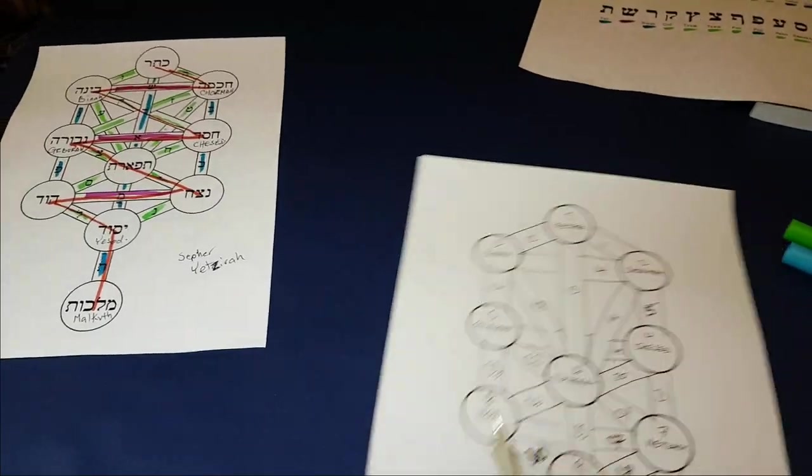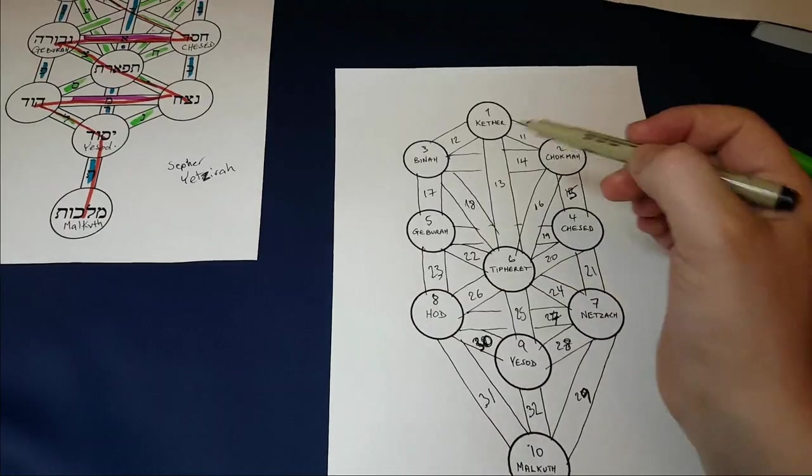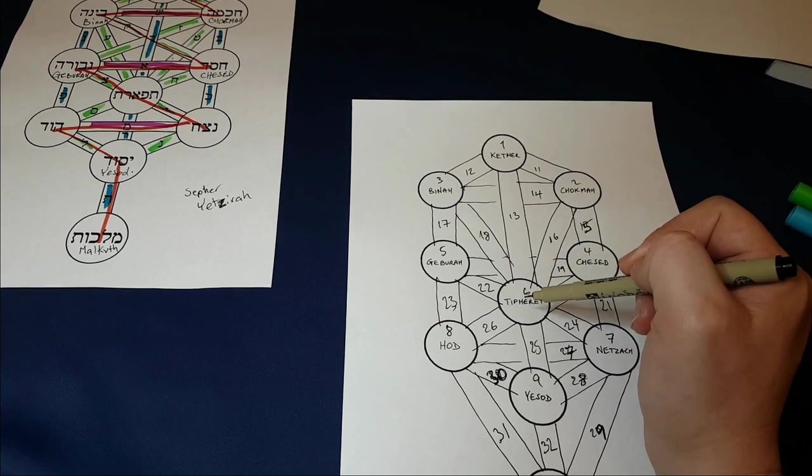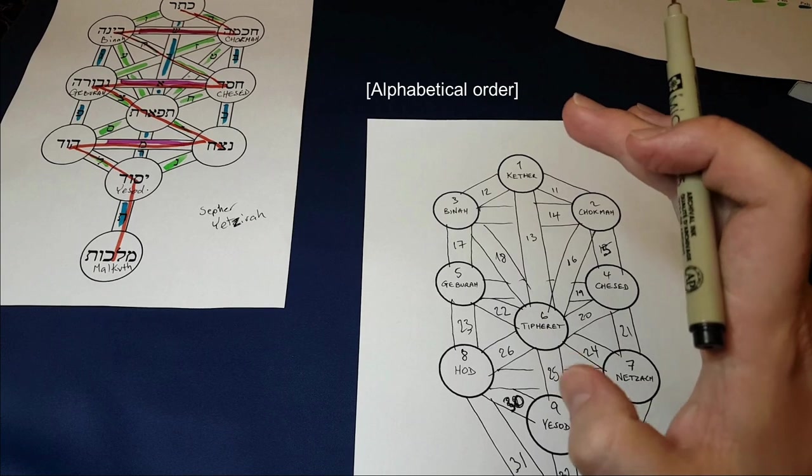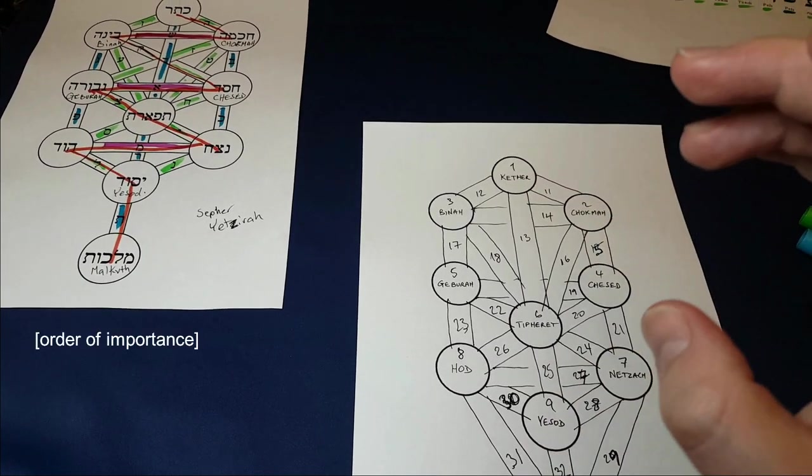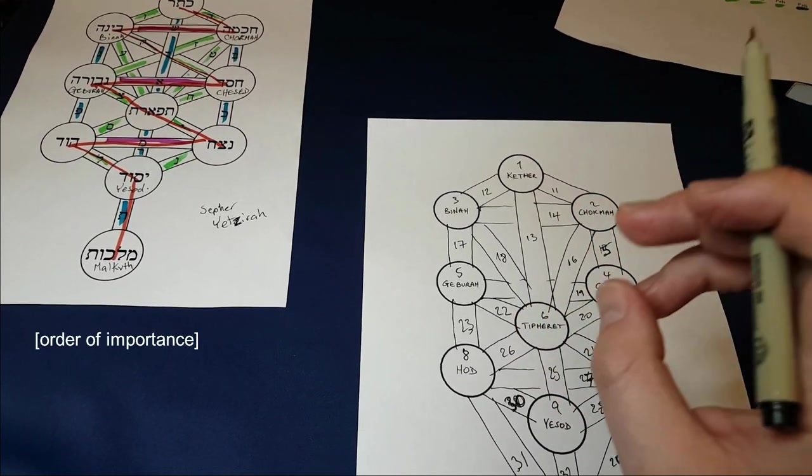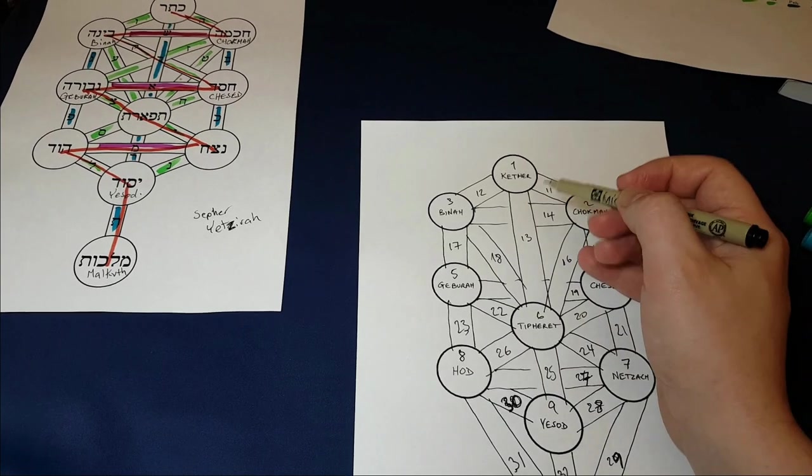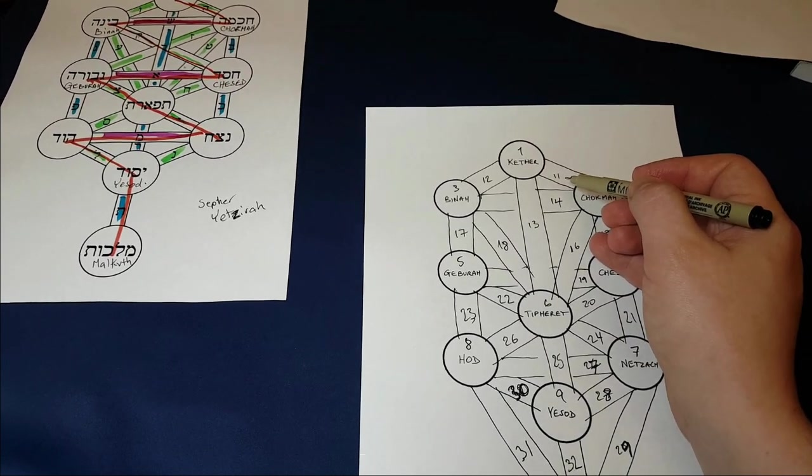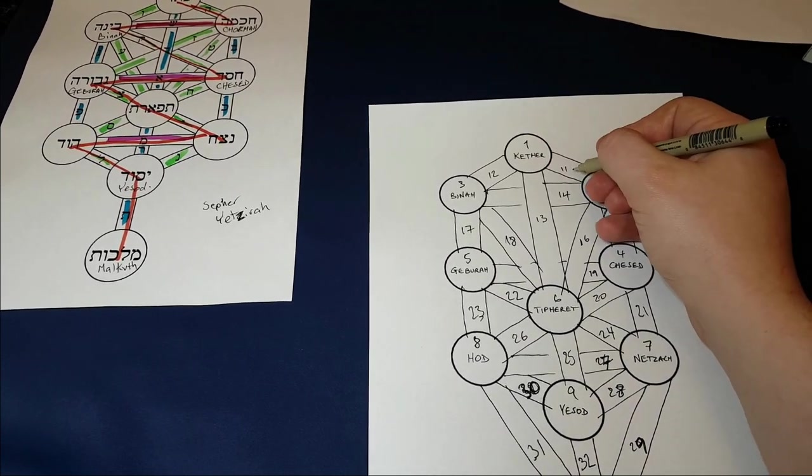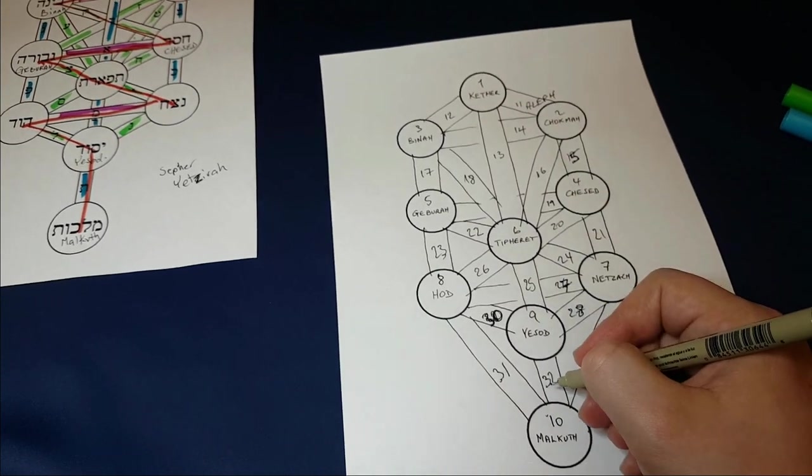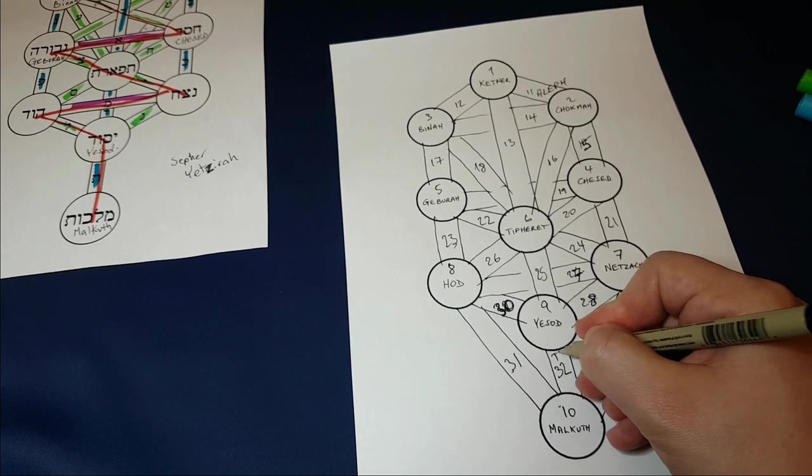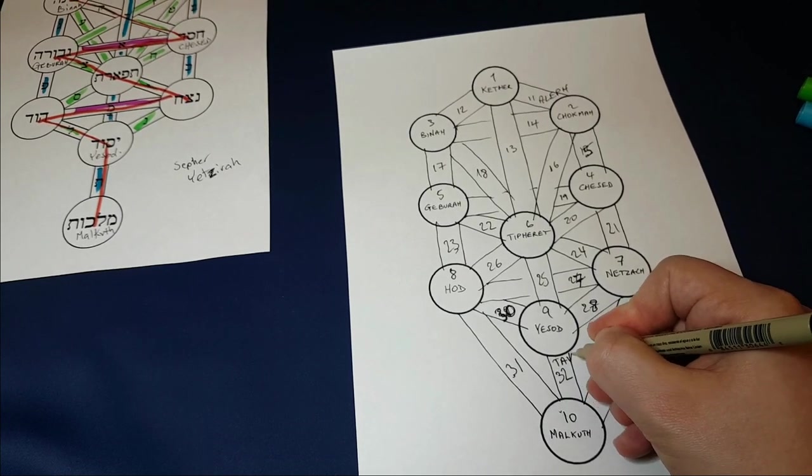All right. Now, the big difference over here is that the Hebrew letters are attributed in order, not the mother letters first and then the double letters and then the single letters, but literally from Aleph, I can't draw an Aleph, I'll write it, Aleph, all the way down to Tau, which is this one, Tau or Tav.